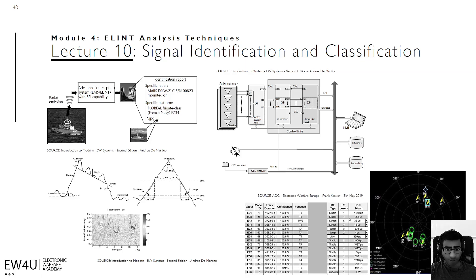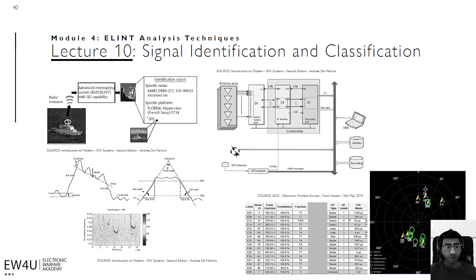Now, regarding the score and threshold concept: bottom left shows two example intercepted pulses. The left pulse is slightly more deteriorated than the right — possibly due to interference or propagation losses. The key feature here is the threshold lines. If the intercepted signal exceeds these lines, it automatically receives a high score, meaning the intercepted signal is likely already part of our database — a known signal.